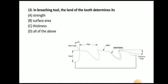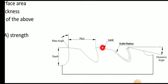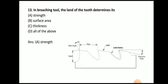Next question: in a broaching tool, the land of the tooth determines its — strength, surface area, or thickness? The answer is strength. The land portion of the broach determines the strength of the broaching tool.